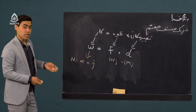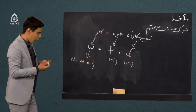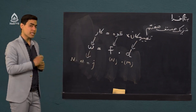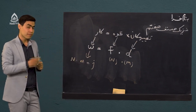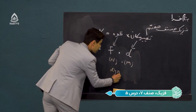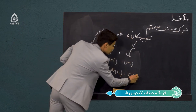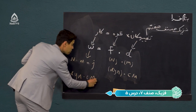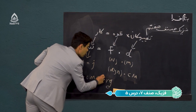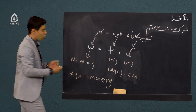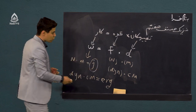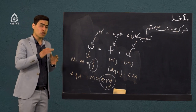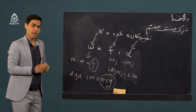از این به بعد واحد اندازه‌گیری کار ژول می‌شه. در بعضی از مسائل اگر قوه را با واحد داین نمایش دادند و تغییر مکان هم با سانتیمتر، یک واحد جدیدی استخراج می‌شه: داین ضرب در سانتیمتر برابر با واحد ارگ می‌شه. پس دو تا واحد اندازه‌گیری برای کار داریم: ژول که اکثر اوقات از آن استفاده می‌کنیم، و ارگ. فارمول کار را یاد گرفتیم، بریم چند تا مثال حل کنیم.